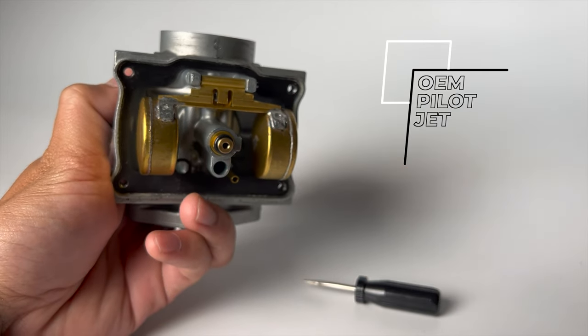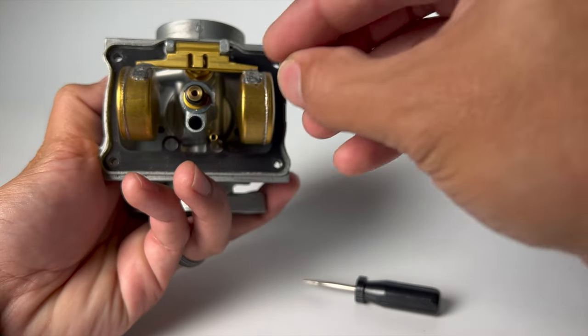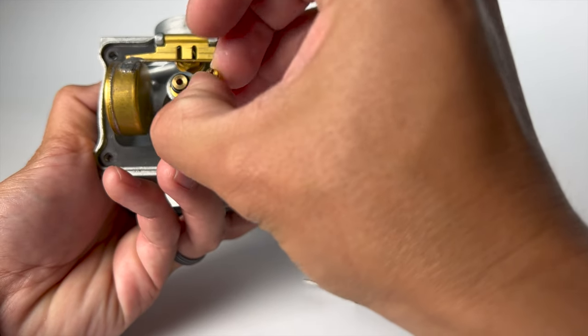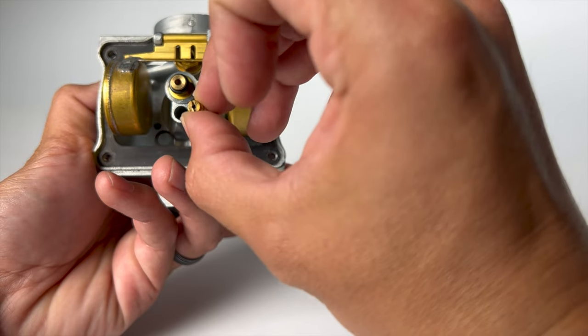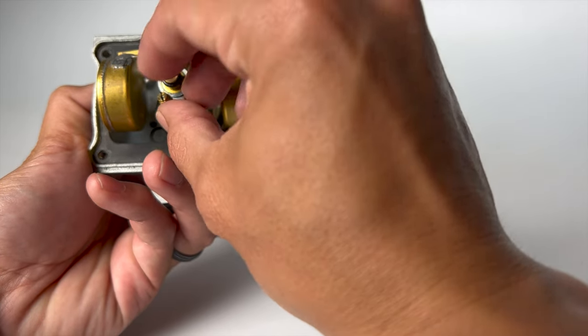Go ahead and swap your pilot jets out with the correct one. Put it back into the hole with the little cutouts on top so your flathead will sit right inside here.